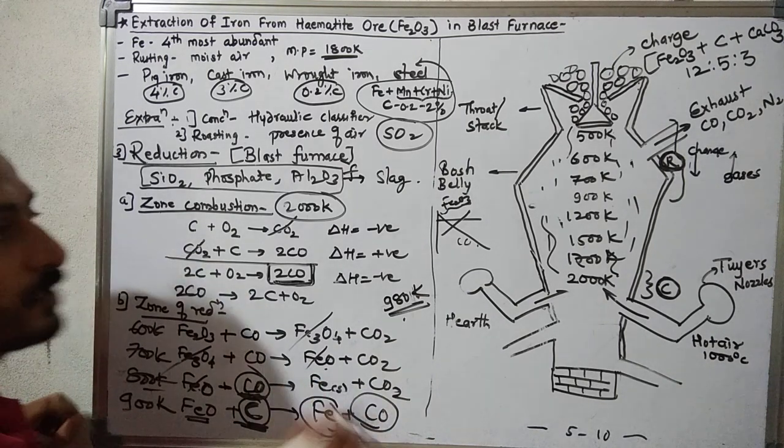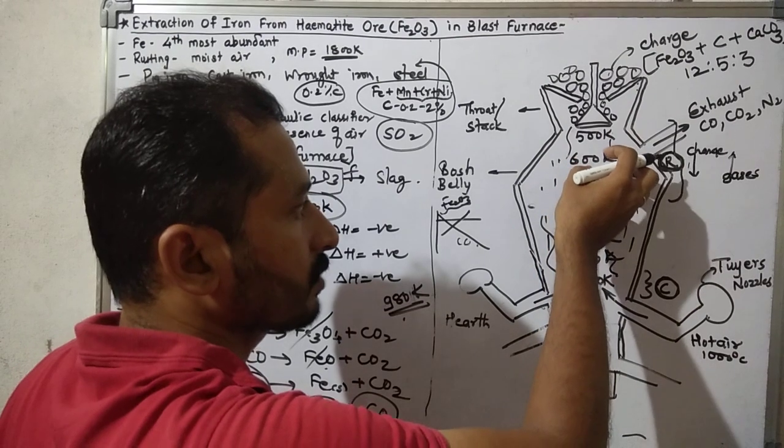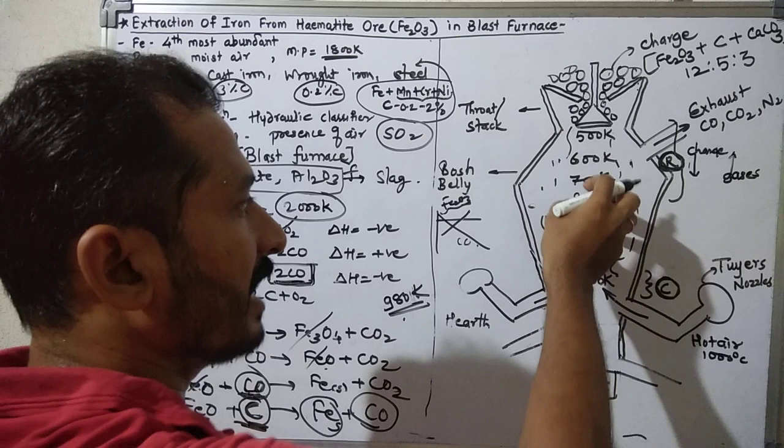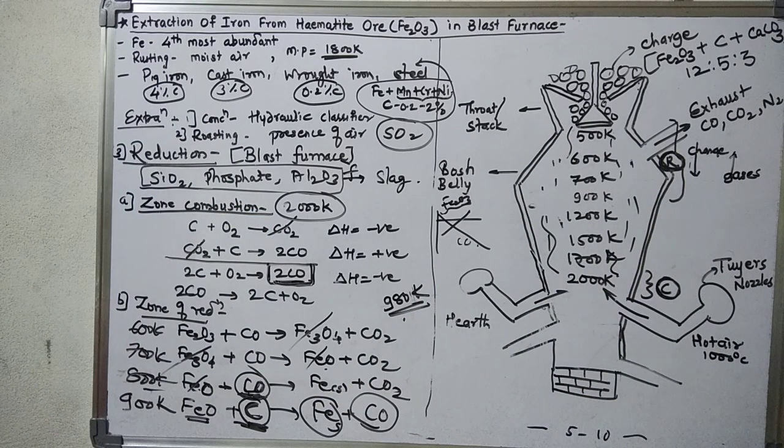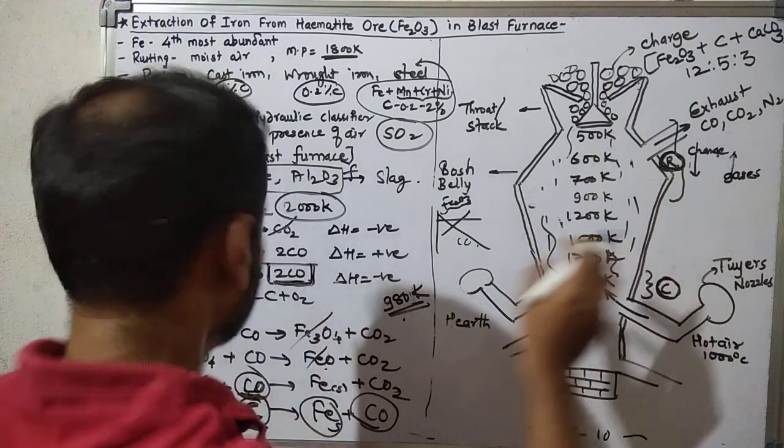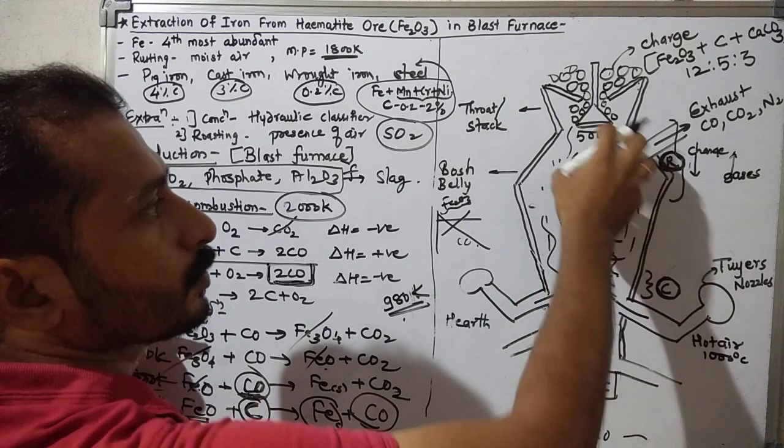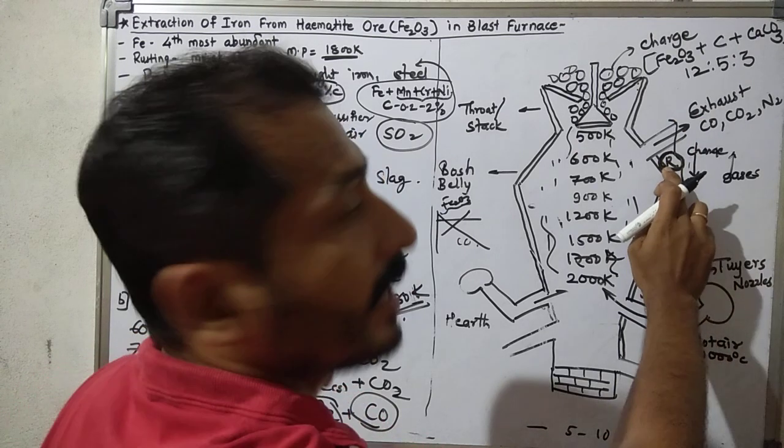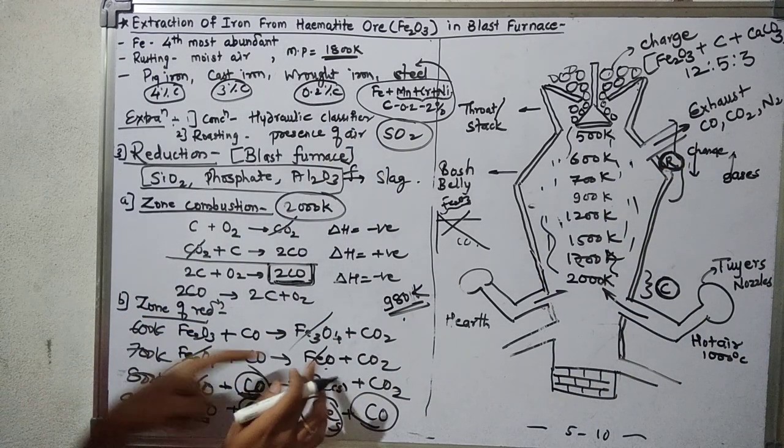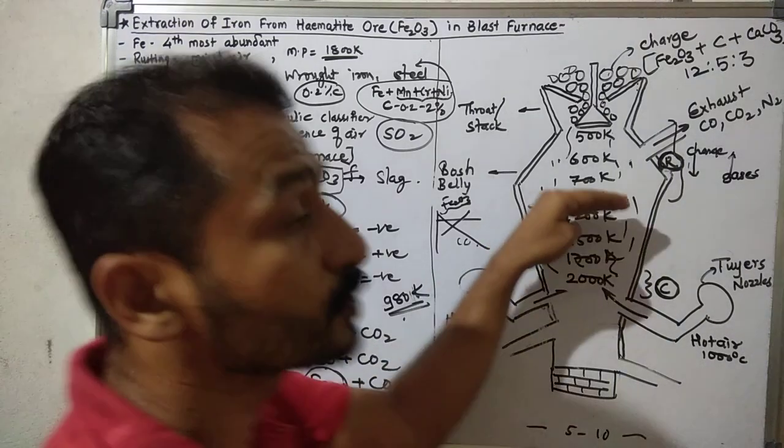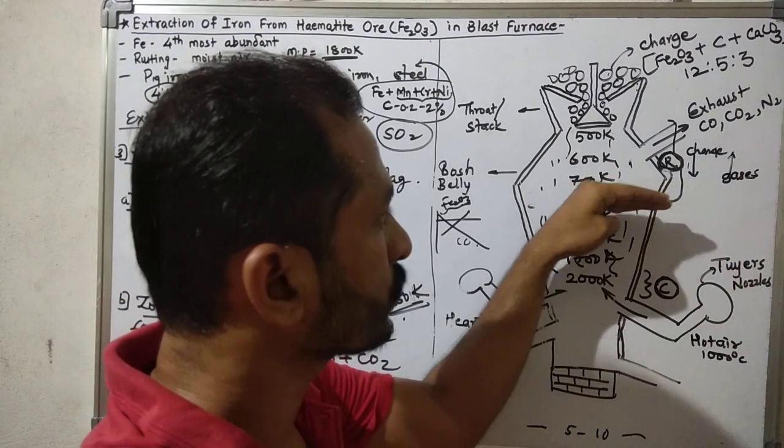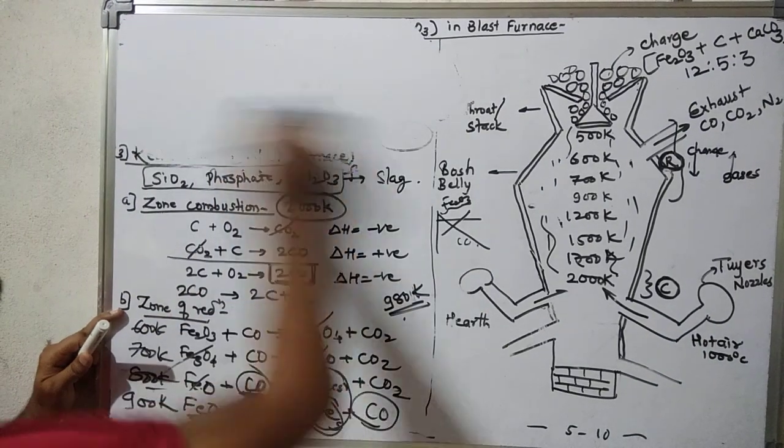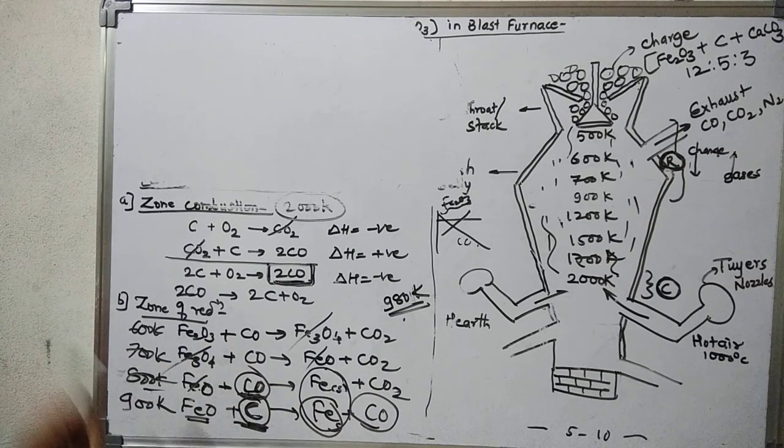Now we got solid Fe. This solid Fe, as it is solid, because of gravity, is moving down. They are coming down to the zone of combustion region. Above the zone of combustion is the zone of reduction. After reduction, we obtain spongy Fe. Now that spongy Fe is moving into the third zone, the zone of slag formation.